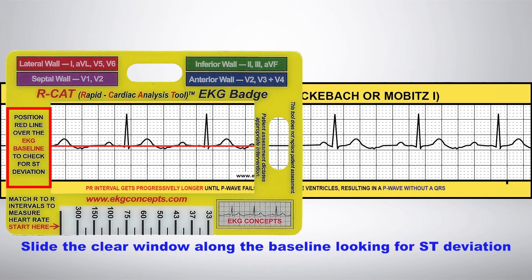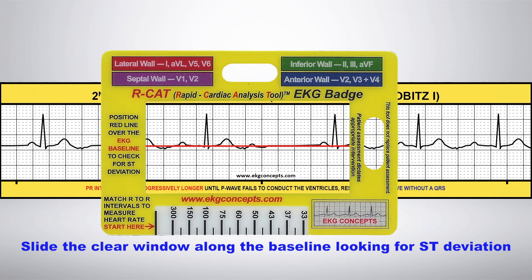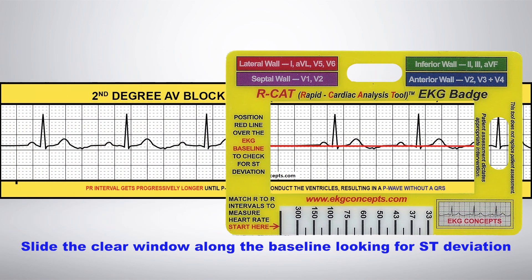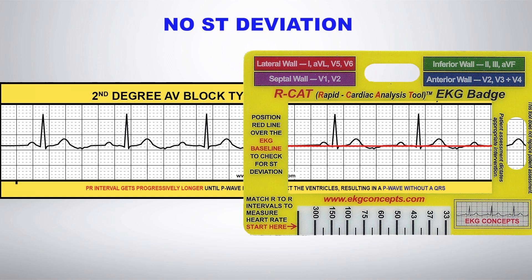As a first step, align the red line of the EKG badge with the baseline and slide it along the rhythm strip looking for ST deviation. This is commonly overlooked.